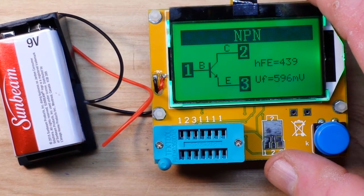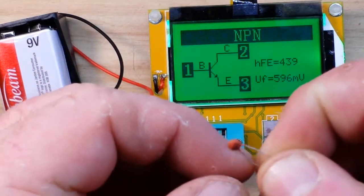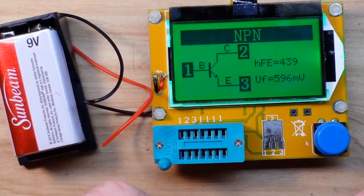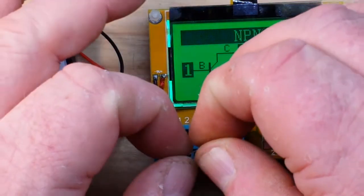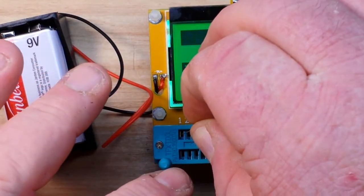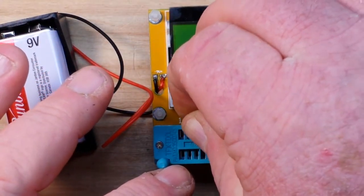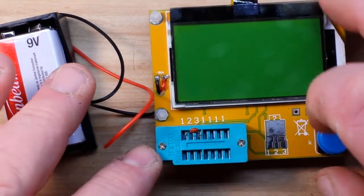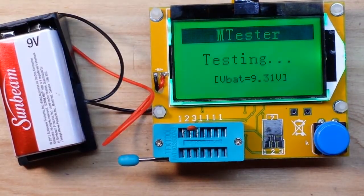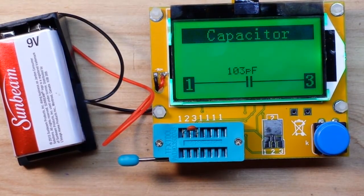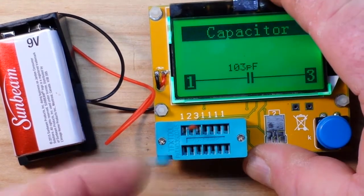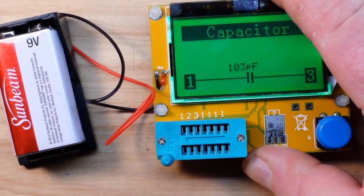Let's see how it does with capacitors. Here's a teensy teensy one. I think this is a 100 pico, or 100 puff as you say. What do we got? 103 puff. Very nice, very nice.